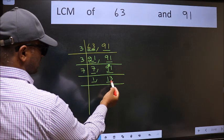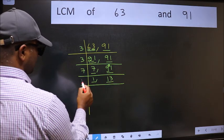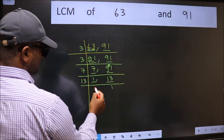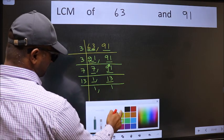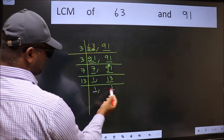So focus on the next number 13. 13 is a prime number. So 13 times 1 is 13. So we got 1 in both the places.